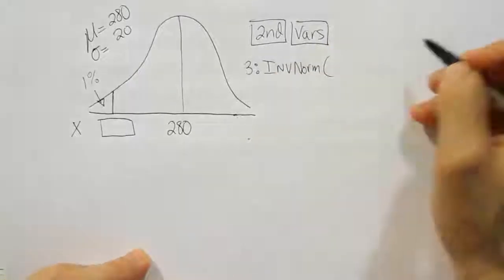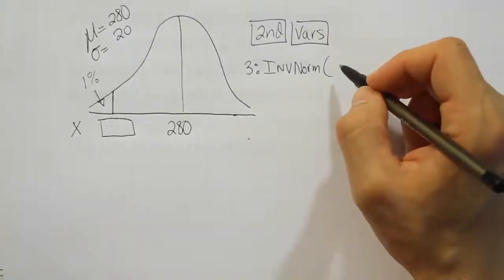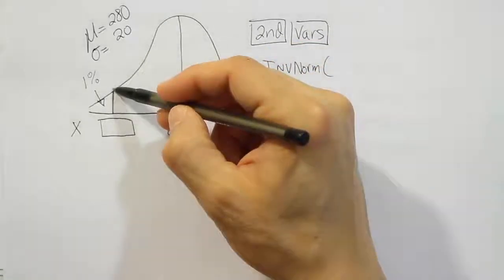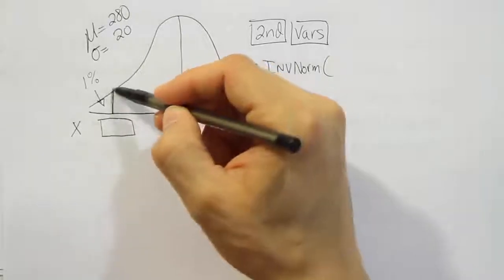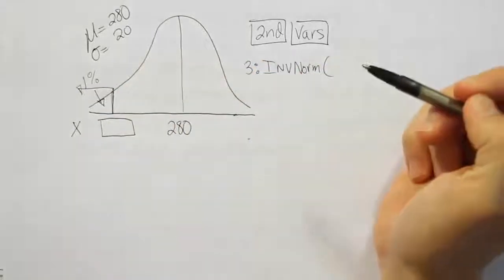And in that option it's going to be called inverse norm. And then from there you have to give it some values. So what we want to do is give it the percentile. The percentile means from this line you drew on your curve, what percent is below that? What percent of the curve is below that point?